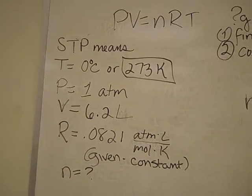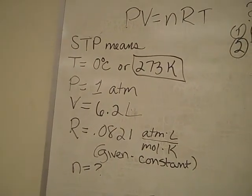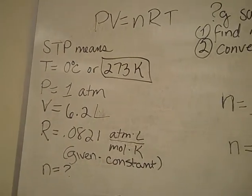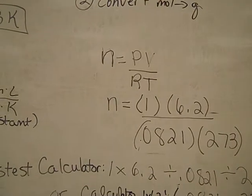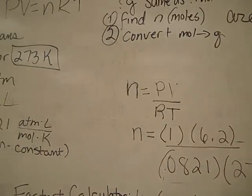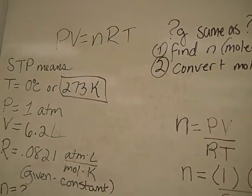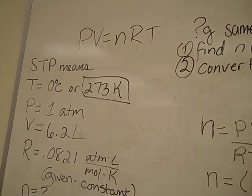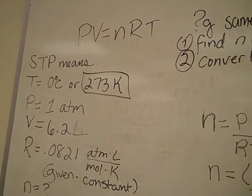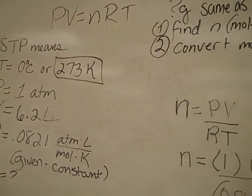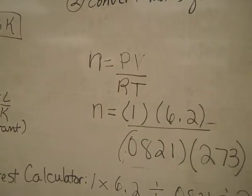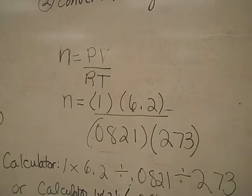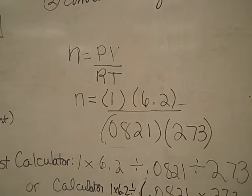You have two options. You can plug in your numbers into PV equals nRT and solve for n, or I find it simpler oftentimes to rearrange first. n in PV equals nRT is being multiplied by r times t. So let's divide both sides by r times t to give us our n by itself. That will leave us with the number of moles equal to the pressure times the volume divided by the gas constant times the temperature.